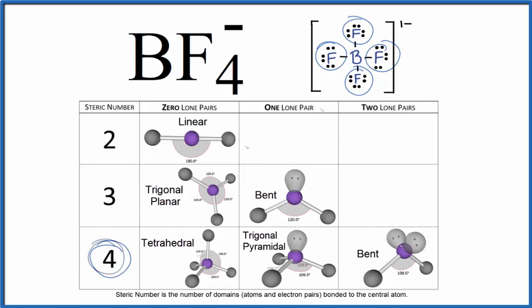Our steric number is four and we don't have any lone pairs on the central atom. All of the electrons are involved in chemical bonds here. These are chemical bonds. So we have zero lone pairs. So we go down and we find that BF4- has a molecular geometry of tetrahedral and these bond angles here should be 109.5.